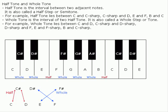A wholetone is the interval of two halftones. It is also called a whole-step or tone. For example, a wholetone lies between C and D, C-sharp and D-sharp, D-sharp and F, E and F-sharp, and B and C-sharp.